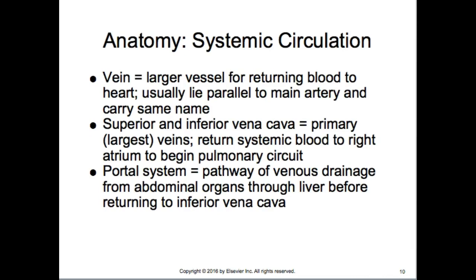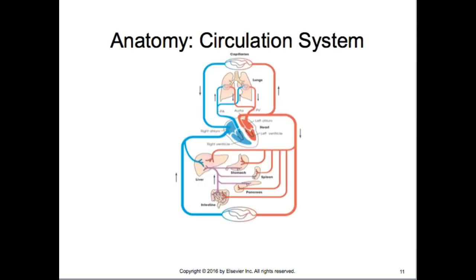The superior and inferior vena cava are the primary, largest veins — they return systemic blood back to the right atrium. The portal system is the pathway for venous drainage from the abdominal organs through the liver before returning to the inferior vena cava, which essentially washes the blood of toxins to be excreted. Here's a picture of the circulatory system.